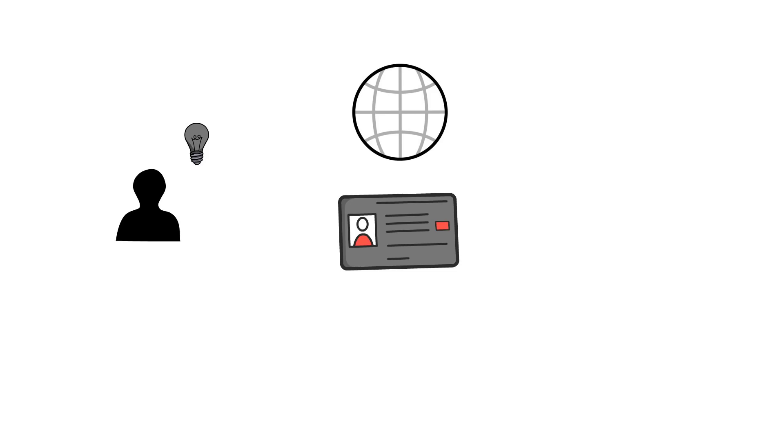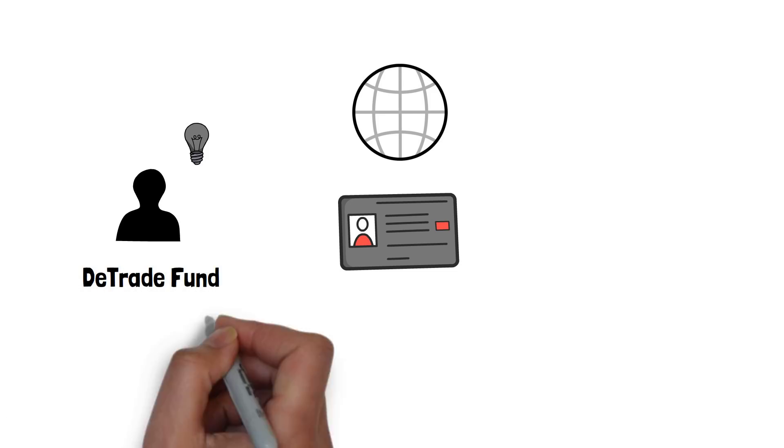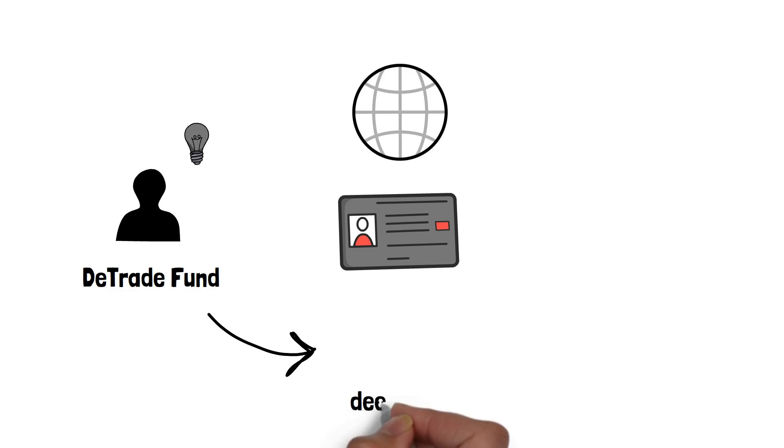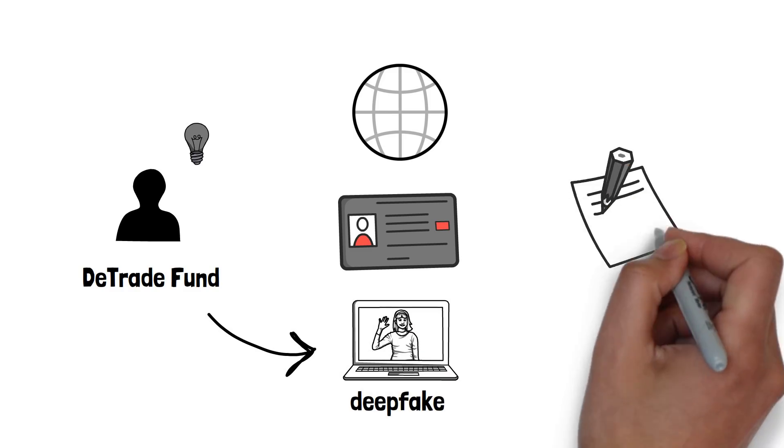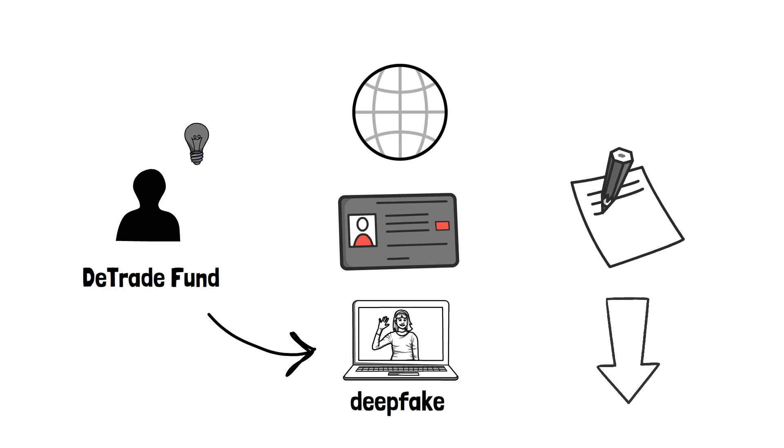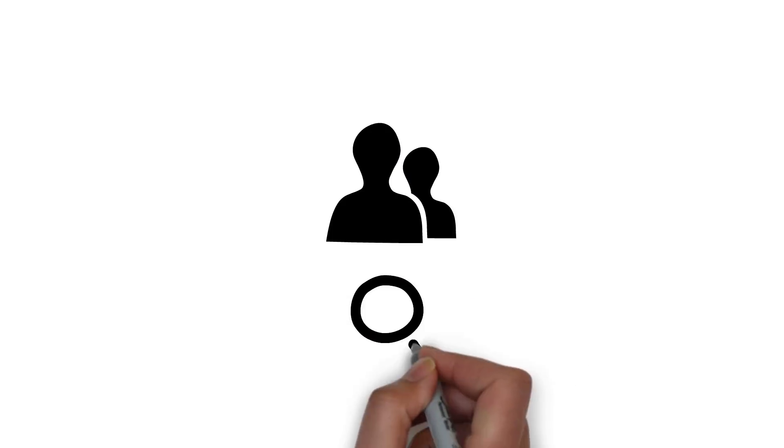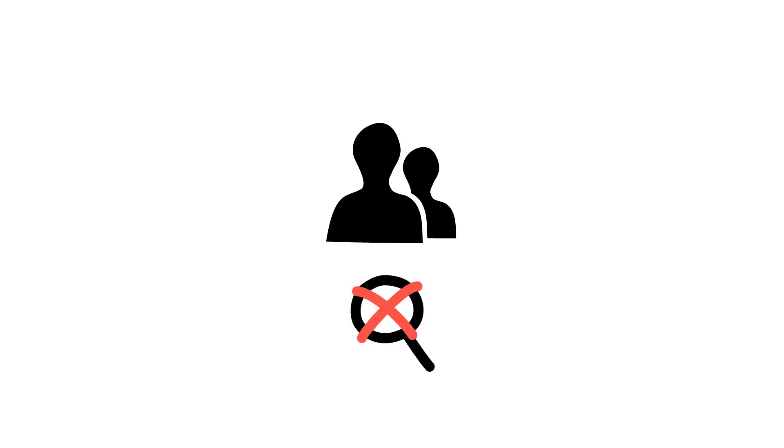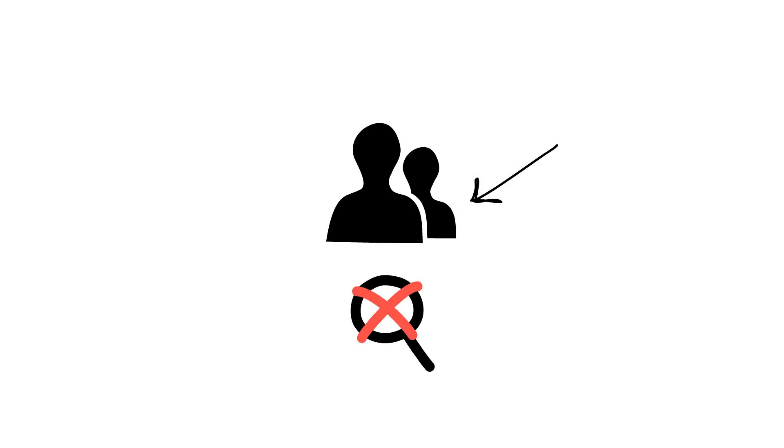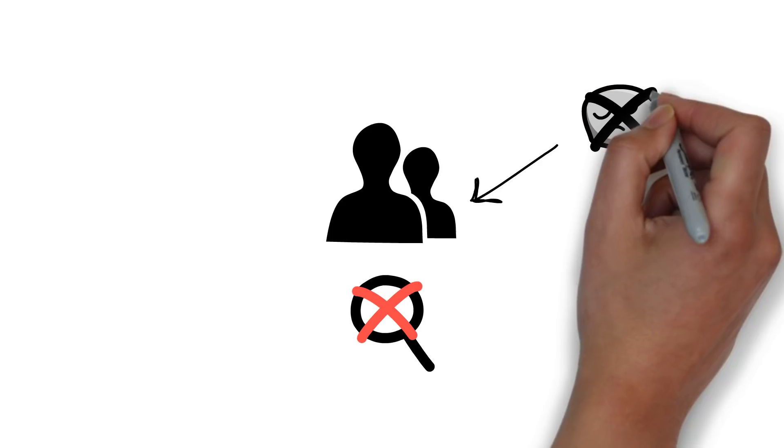Proving identity online is becoming increasingly difficult and scammers are turning to unusual methods to build the trust of others, as was the case with Dtrade Fund, who some suspected to have used deepfake technology to create a video of a fake CEO. This story was covered by Rekt News. On the other hand, if you can't find any information on who is behind the project, remember that an anonymous team isn't necessarily a bad thing, as the founder of Bitcoin remains anonymous to this day.